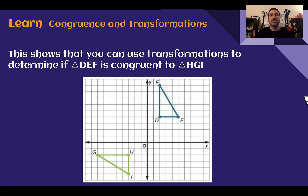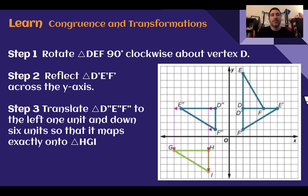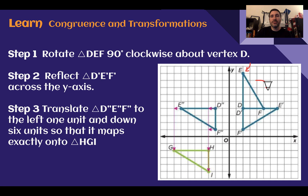Congruence and transformations. This shows that you can use transformations to determine if triangle DEF is congruent to triangle HGI. To do this, we need to come up with a sequence of transformations to see if we can map our pre-image onto our image. Our first step is to rotate it 90 degrees clockwise, rotating it down to the right so it looks like D prime E prime F prime — getting it more positioned the same way, closer each time.